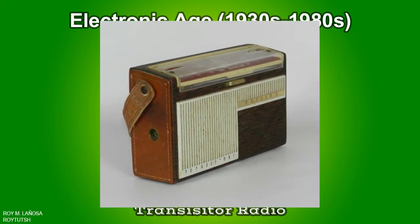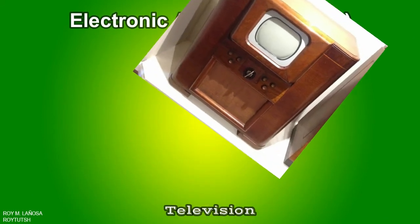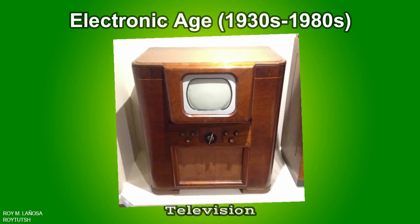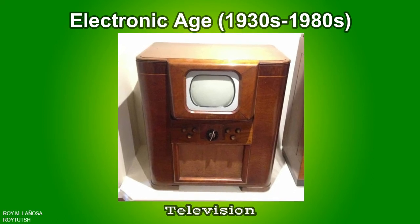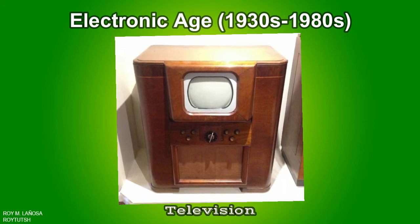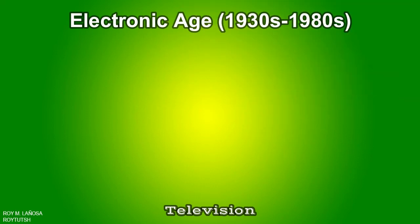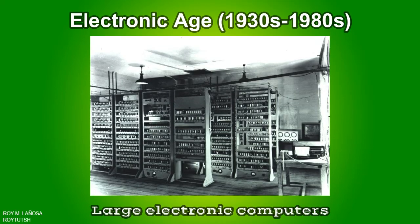In 1941, the United States implemented the 525-line television standard. Electrical engineer Benjamin Adler played a prominent role in the development of television. The world's first 625-line television standard was designed in the Soviet Union in 1944 and became a national standard in 1946. Large electronic computers: EDSAC in 1949 and UNIVAC in 1951. ENIAC — also known as Electronic Numerical Integrator and Computer — was the first electronic general-purpose digital computer.